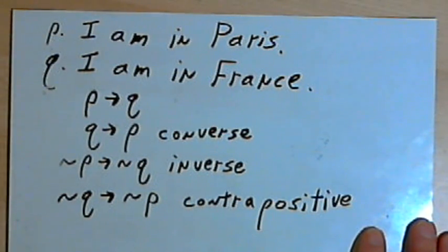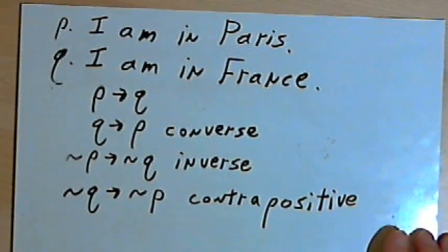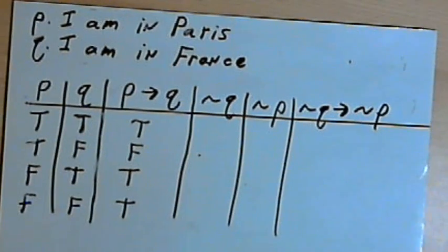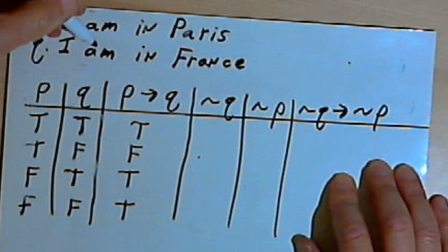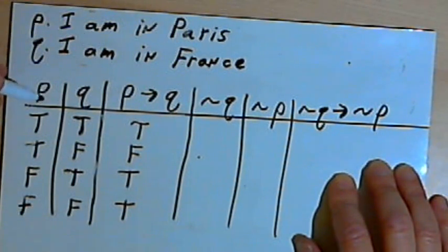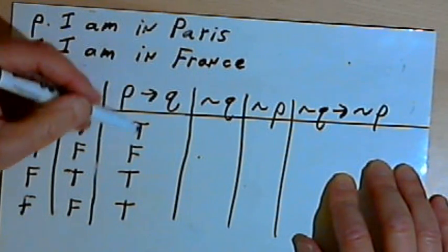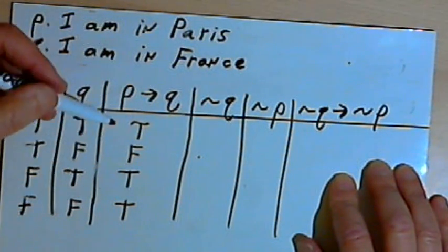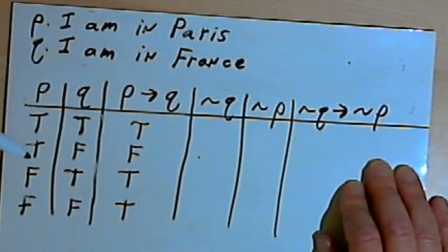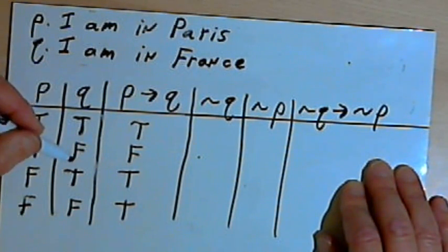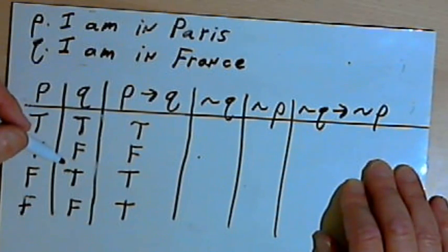What I want to do is take a second and just fill in a truth table with both the conditional and its contrapositive. So I've got this started already. I've rewritten the original two statements, I am in Paris for P, and Q, I am in France. And I filled in columns for P and Q and the conditional. And remember, when you have a conditional, the only place the conditional is not true, the only place where it's false is when you have a true statement and then a false statement.